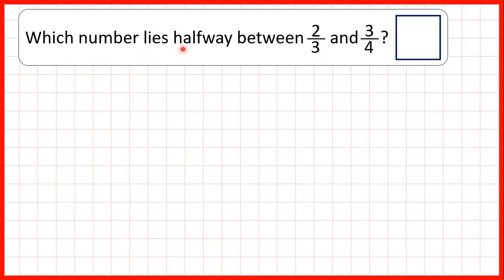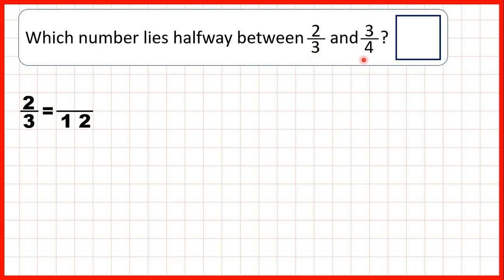So which number lies halfway between two-thirds and three-quarters? Here we need to find equivalent fractions. The lowest common multiple of three and four is twelve, so we can find fractions equivalent to two-thirds and three-quarters which both have a denominator of twelve.